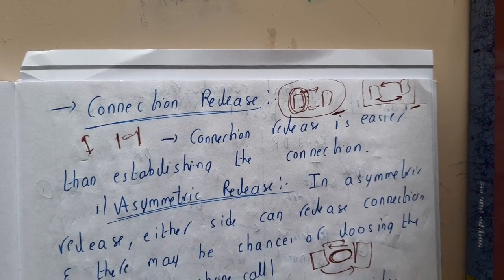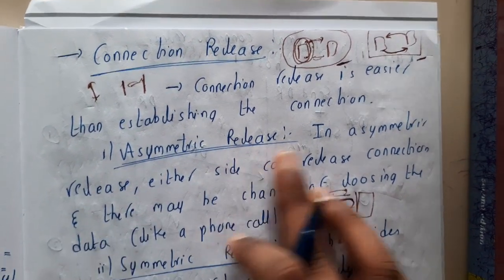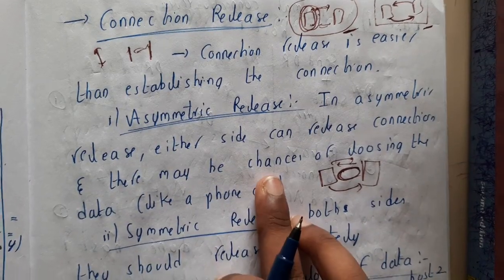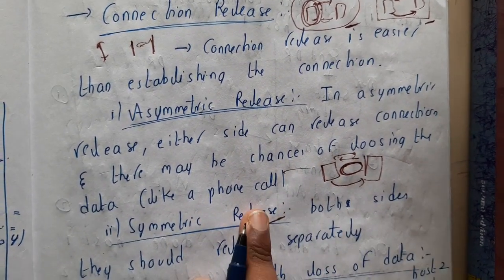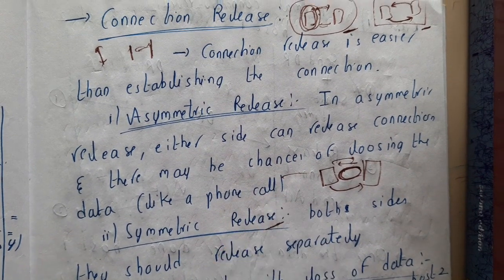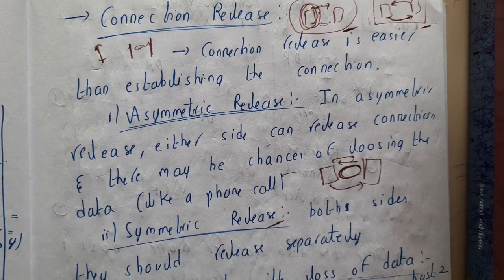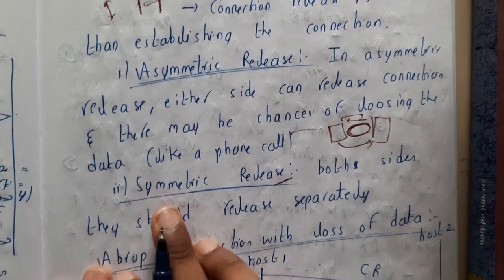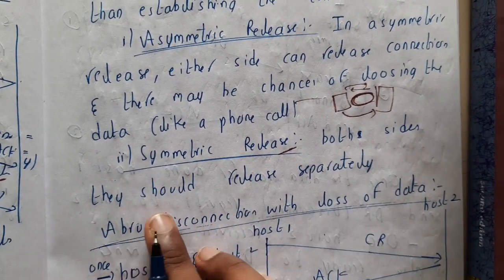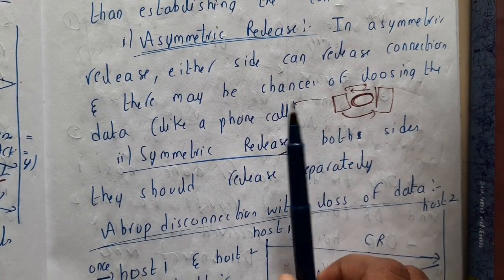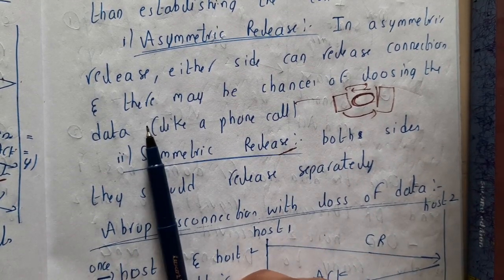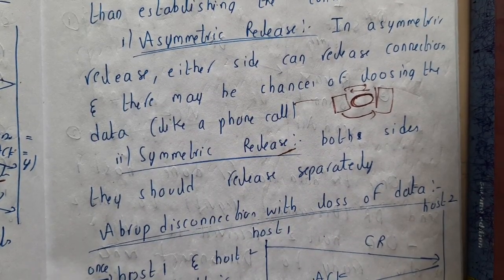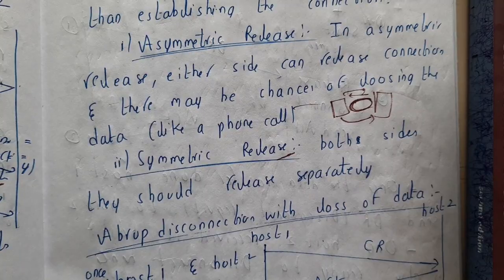In asymmetric release, either side can release the connection, but there is a chance of data loss — like a phone call where your friend disconnects once their conversation is done. In symmetric release, both sides release separately. If one person says 'bye,' the other must also say 'bye.' We send a connection release request, abbreviated as CR.